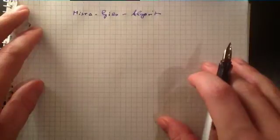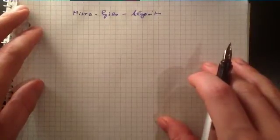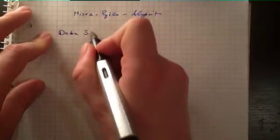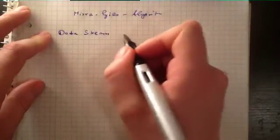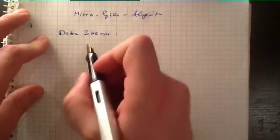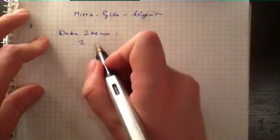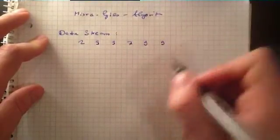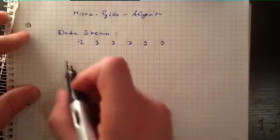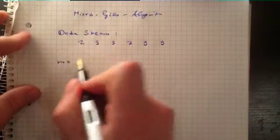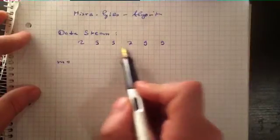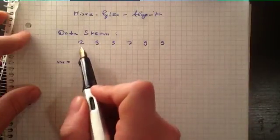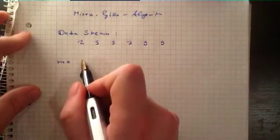We will discuss the Misra-Gries algorithm with the help of an example. So we have a data stream, and for example it's 2, 9, 9, 7, 9, 9. For this stream we know M is the number of total different numbers in the stream. So M is 1, 2, 3, 4, 5, 6 in this case.